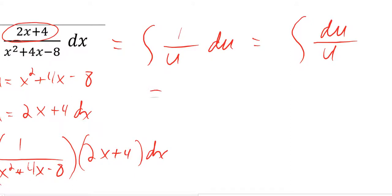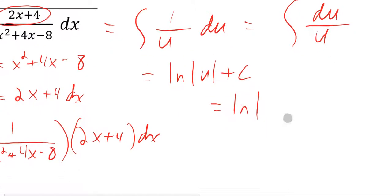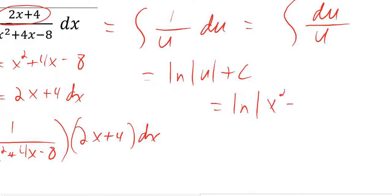But anyway, when you integrate 1 over u, everyone knows you get ln the absolute value of u plus c, and that's going to be ln the absolute value of x squared plus 4x minus 8 plus c.